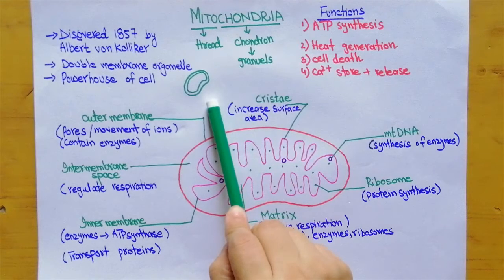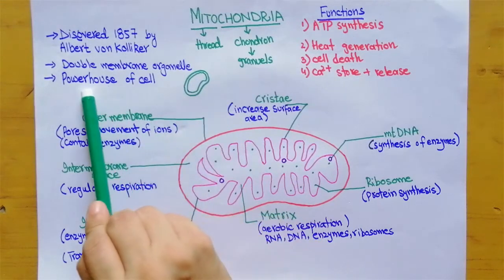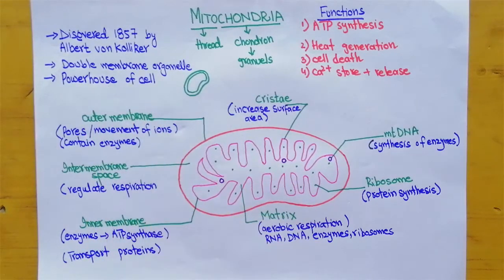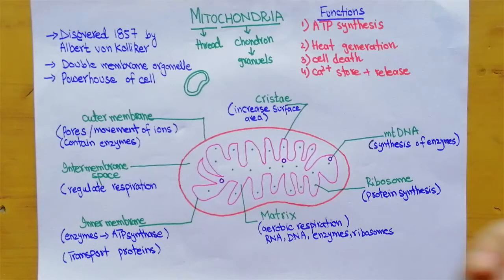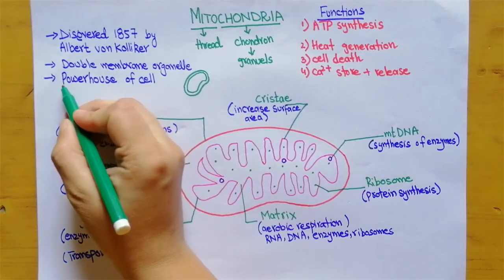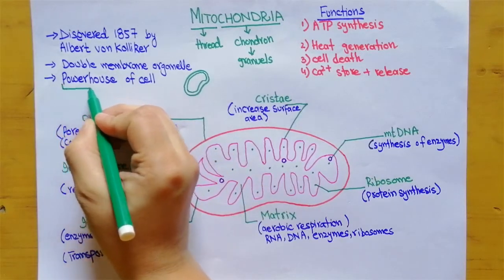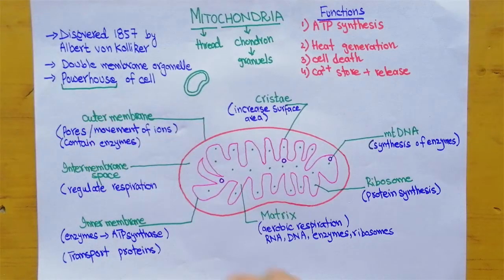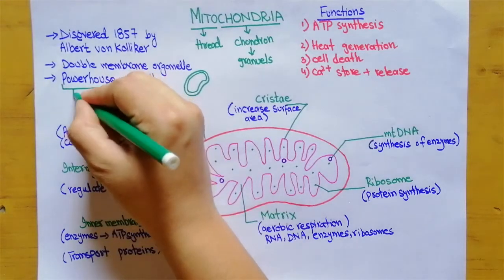Mitochondria is known as the powerhouse of the cell. As I told you, it is like a battery which gives power to the animal cell or the plant cell — that is why it is called the powerhouse.